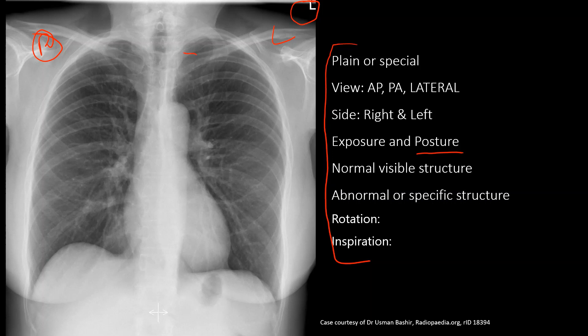For rotation, identify the medial end of the clavicle on both sides and point out the spinous process in between them. If the distance from the spinous process to each clavicle is equal, then it is a properly rotated status. Generally, chest x-rays are taken in fully spirited — that is, fully inspired — status.